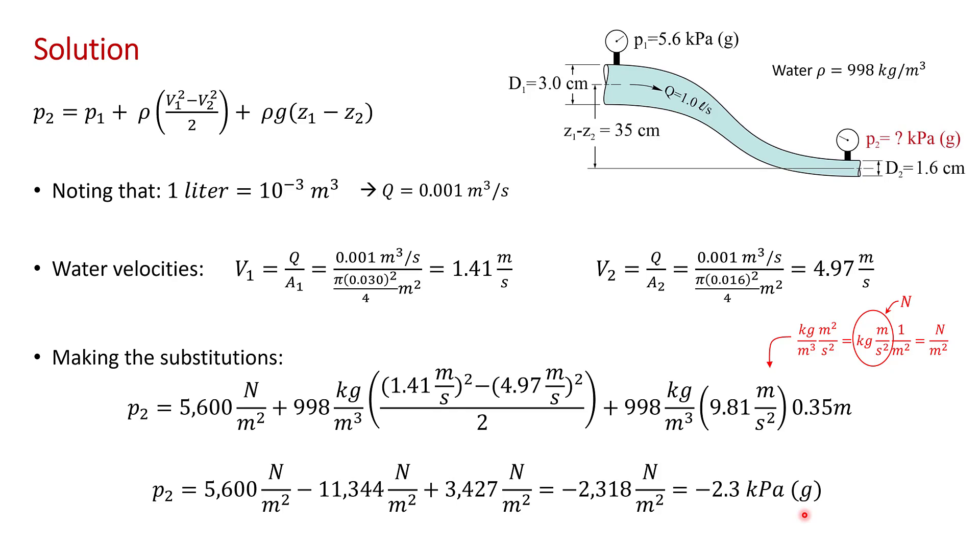Where the G here is reminding you that it's a gauge pressure. Since P1 is a gauge pressure, P2 will also be a gauge pressure. And that's the final answer.